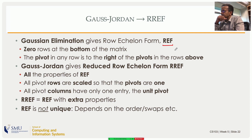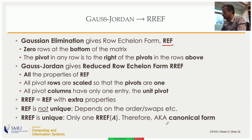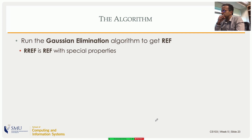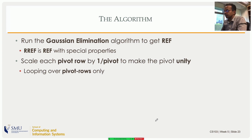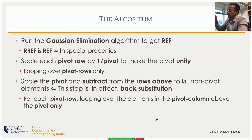REF is not unique — swapping rows during Gaussian elimination can yield different row echelon forms for the same matrix. RREF, however, is unique for a given matrix, which is why it is called a canonical form. The algorithm runs Gaussian elimination first to get REF, then does a second loop: scale each pivot row by 1/pivot to make pivots one, then subtract appropriate multiples of each pivot row from the rows above.